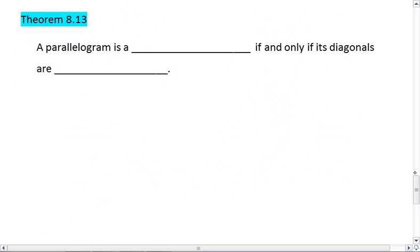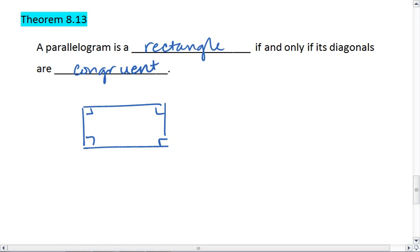Alright, Theorem 8.13. A parallelogram is a rectangle if and only if its diagonals are congruent. So if we have a rectangle, then the two diagonals not only bisect each other, but they're congruent to one another. So in this picture, AC is congruent to BD.